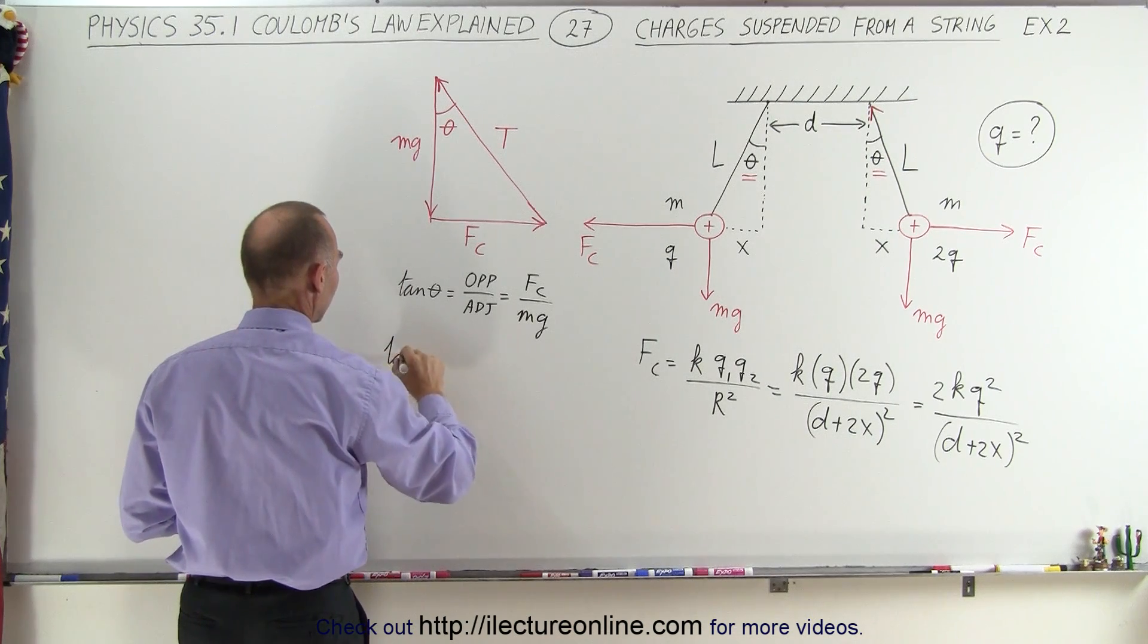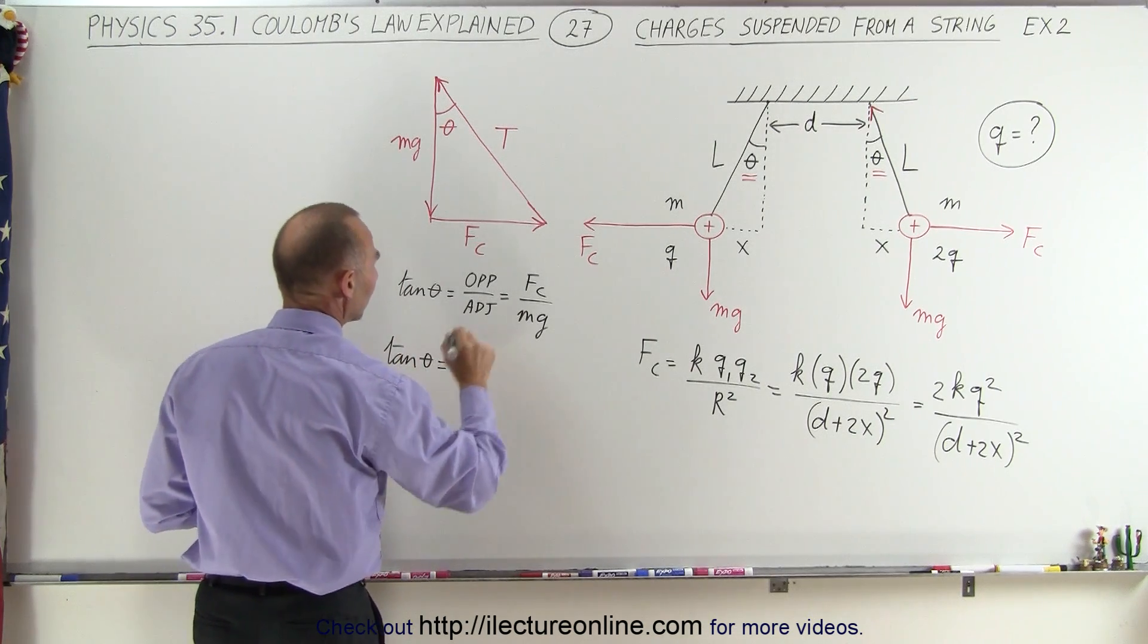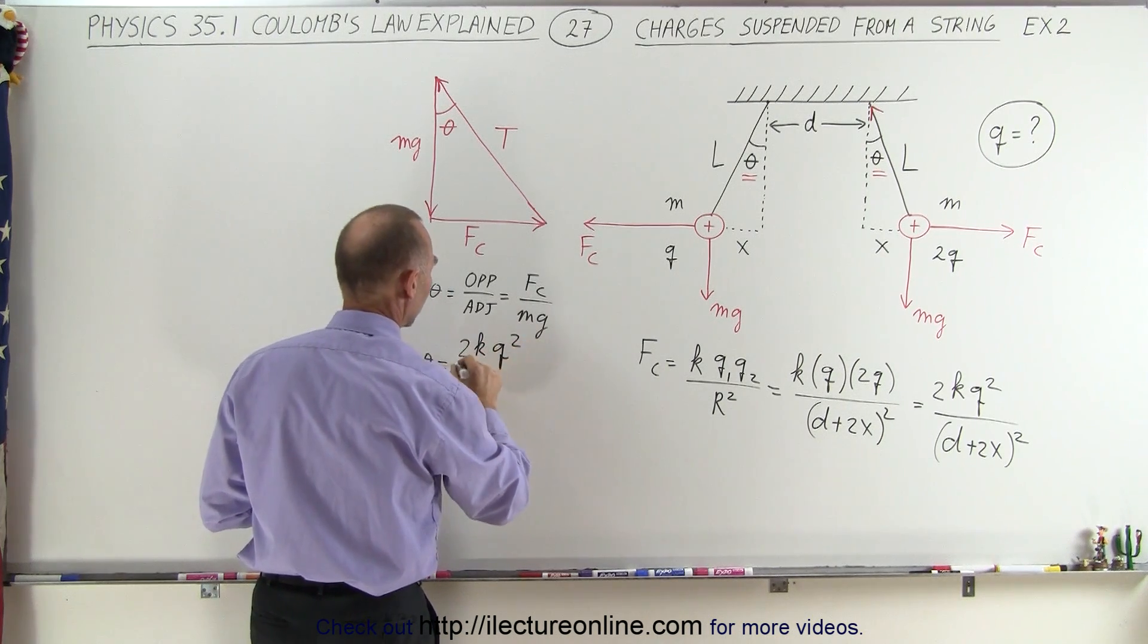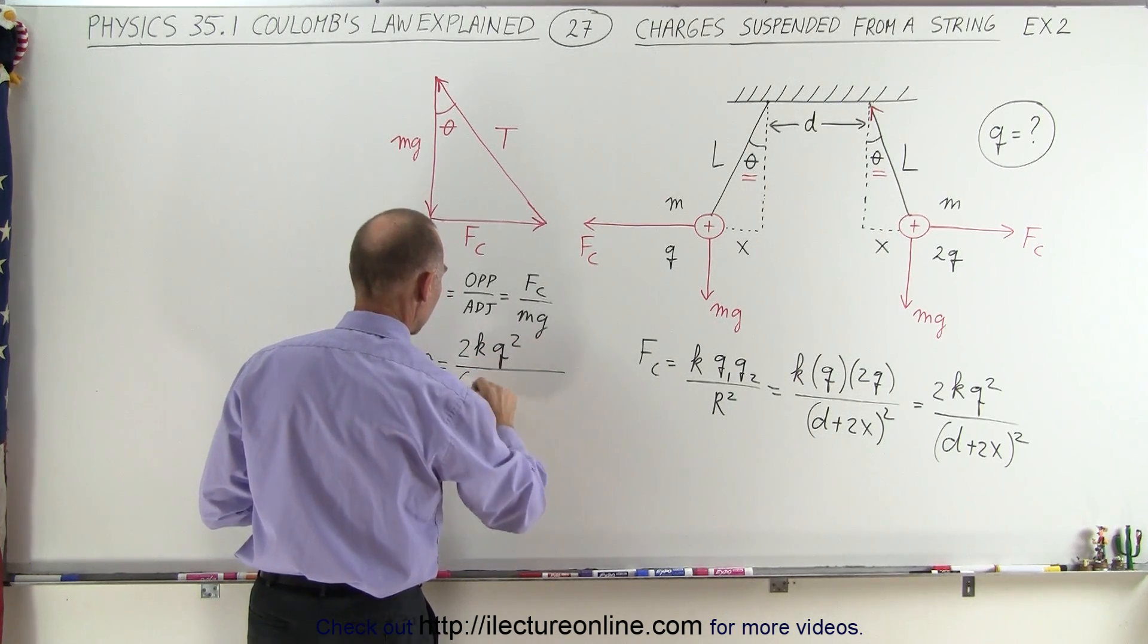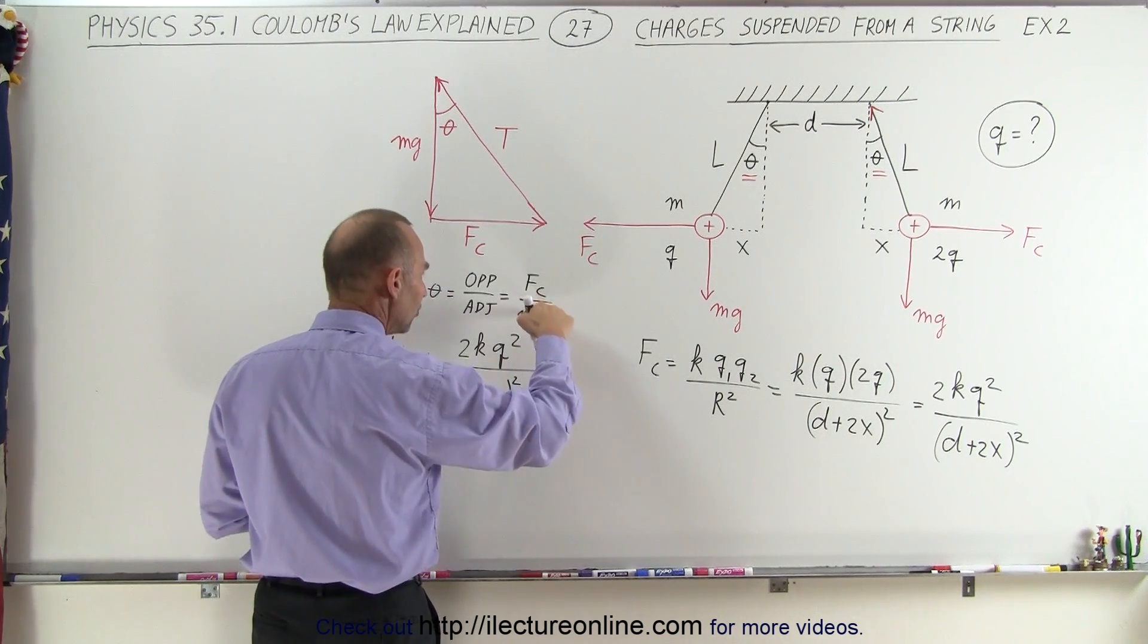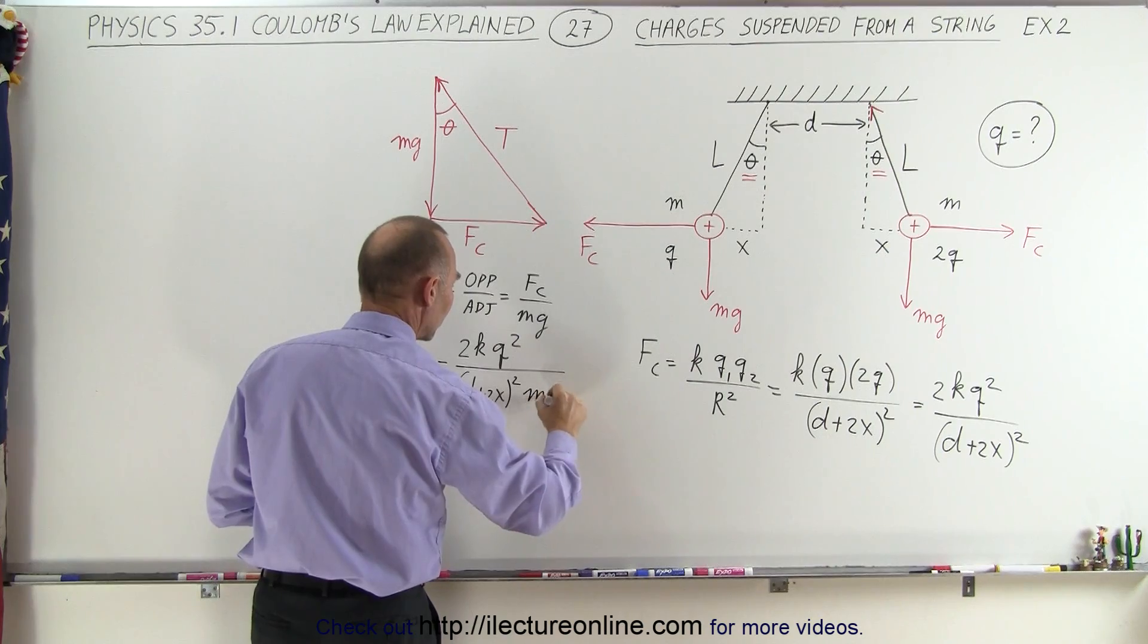Or we can say that the tangent of theta is equal to F_C, which is 2Kq² divided by the quantity (D + 2X)² times mg, because mg is in the denominator, so we can write that there.